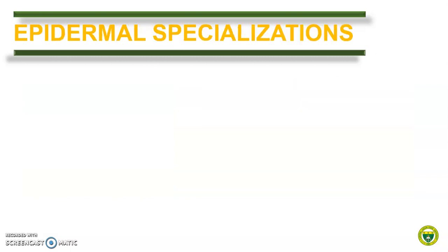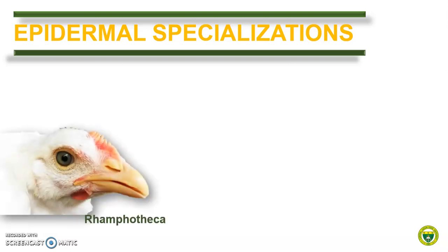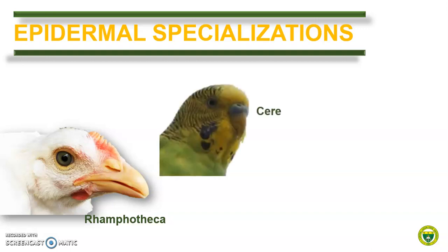The epidermis is thicker in featherless regions to accommodate the mechanical forces to which these areas are subjected. Epidermal specializations occurring in these regions include the rhamphotheca, which is the horny sheet that forms the epidermal covering of the beak, the cere, which is the soft, variably colored region of the skin present on the upper beak.